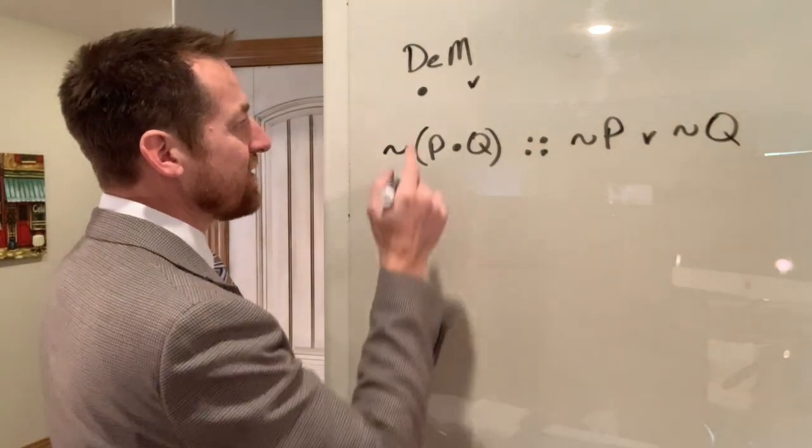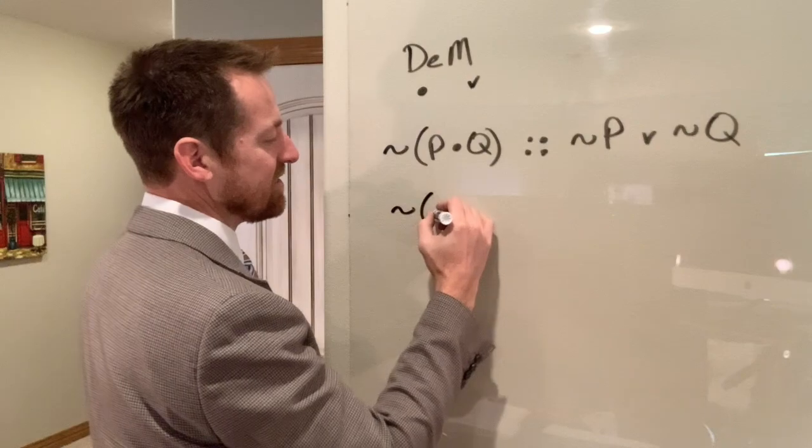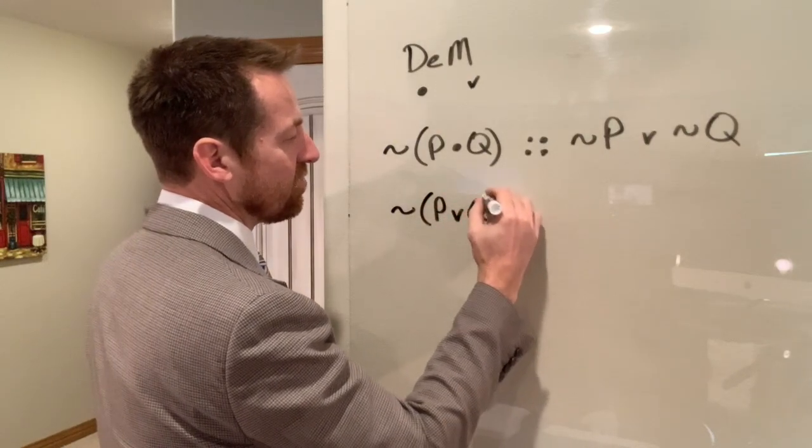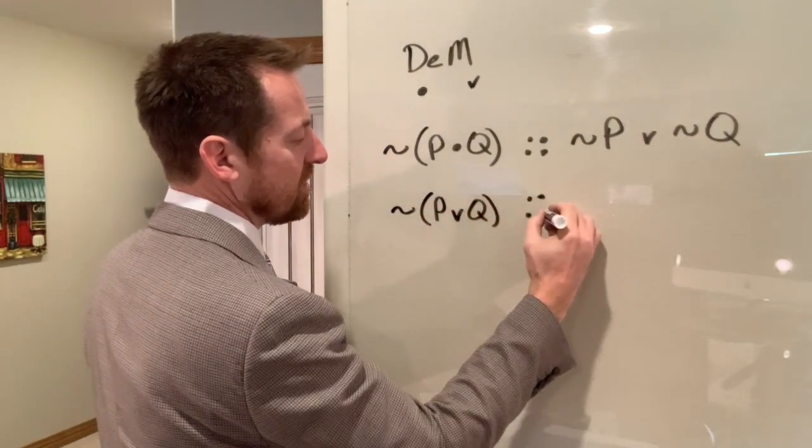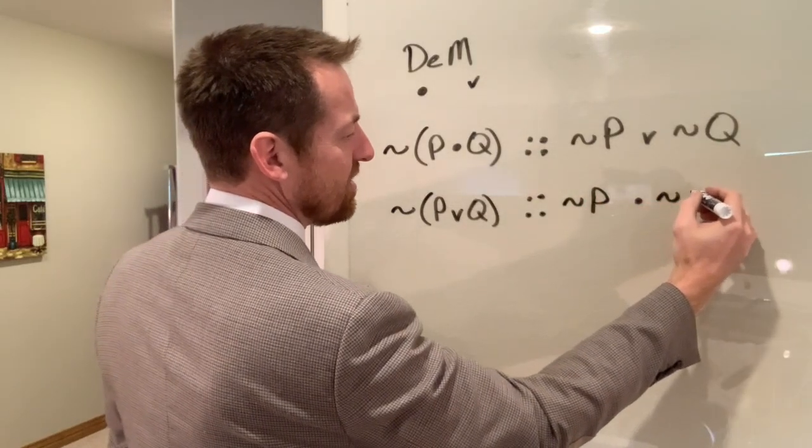Similarly, if we started out with a disjunction in the parentheses, we could go from it's not the case that P or Q to it's not the case that P and it's not the case that Q.